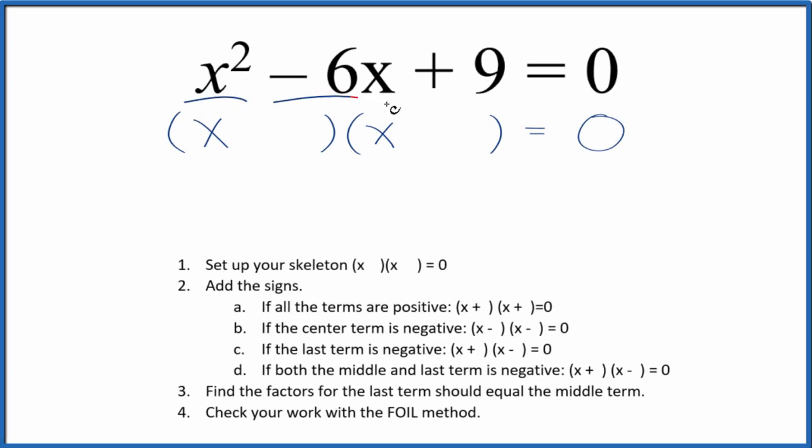Let's factor the equation x squared minus 6x plus 9. And here's how we'll do it. We'll start with a skeleton equation. This is our skeleton equation.